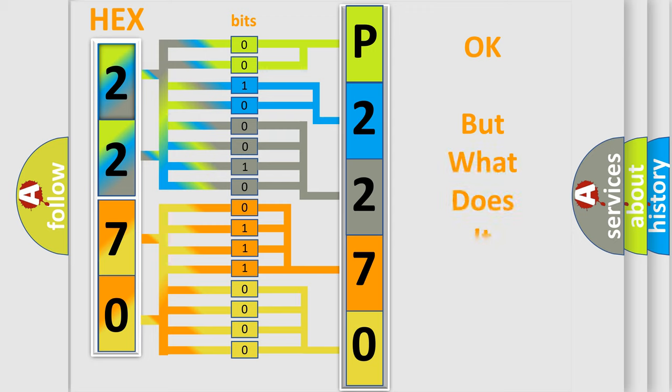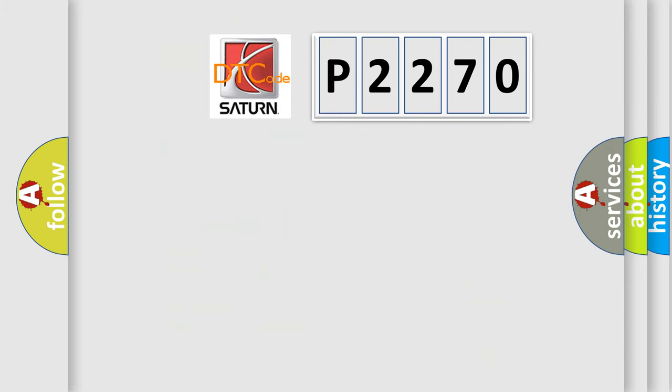The number itself doesn't make sense if we can't assign information about what it actually expresses. So, what does the diagnostic trouble code P2270 interpret specifically for Saturn car manufacturers?